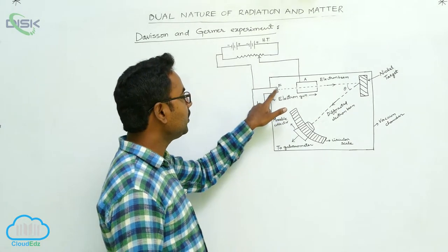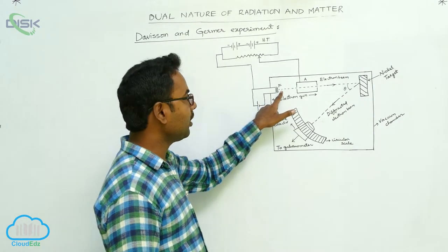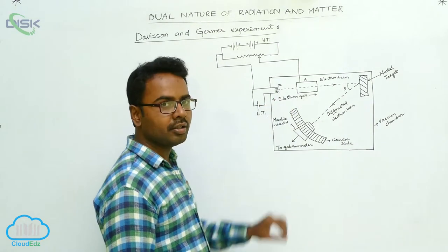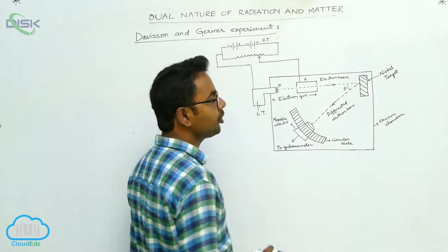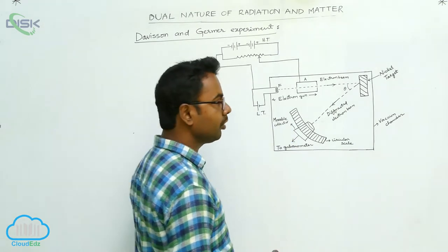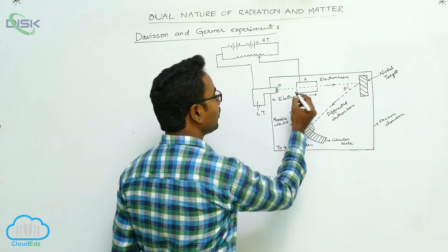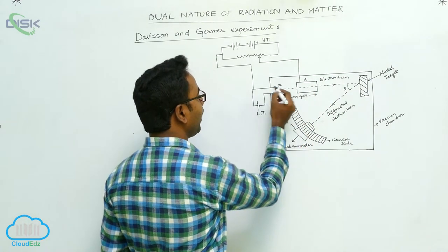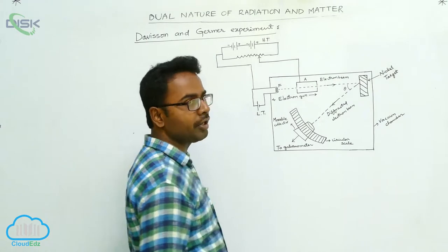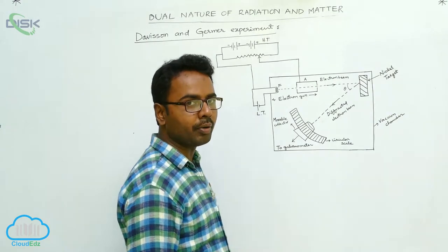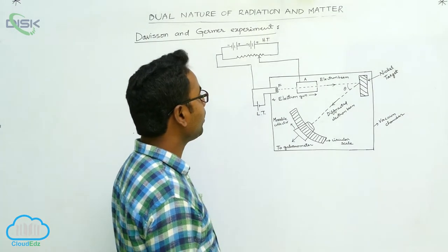The electrons released from the filament are accelerated by a potential applied to the chamber A. Between A and the filament F, we apply the required potential difference, which is connected to a high-volt battery.